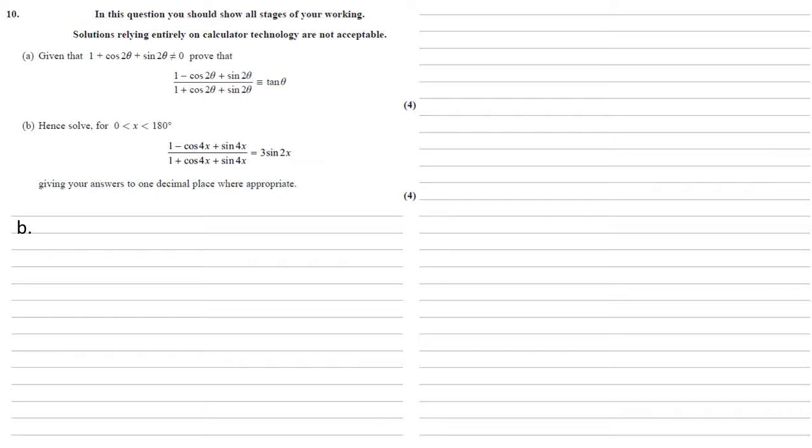So using the fact that the left hand side of the top equation became a tan with half as many degrees in it, we're going to do the same thing here. So the left hand side is going to simplify to tan 2x, 2x being half of 4x, and that's going to be equal to the 3 sine 2x that we've been given in the question.